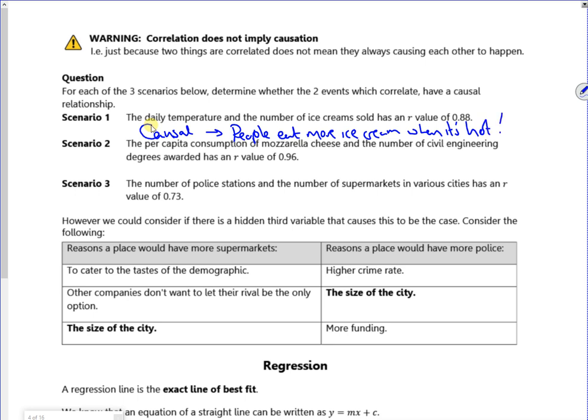The next one says, consumption of cheese and the number of civil engineers. Now that actually does work, but it's not true, is it? So that's non-causal. I'm just very aware of the time, so I've got to kind of get through this.